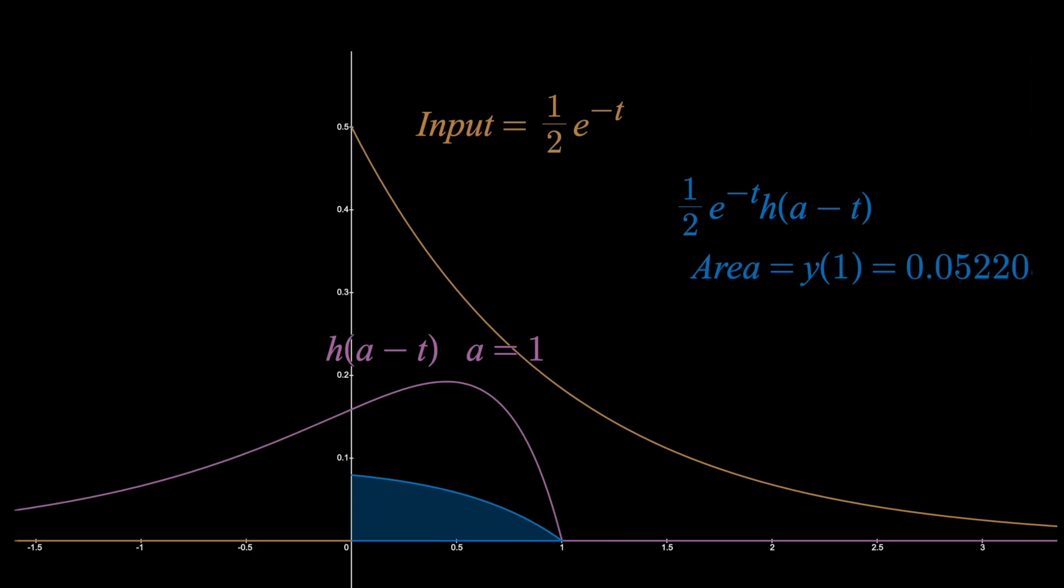So right now, the area under the curve is about 0.052, which means at time equals one second, the block will be at the position x equals 0.052.